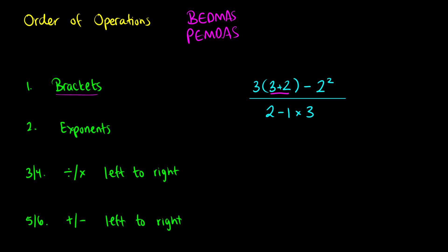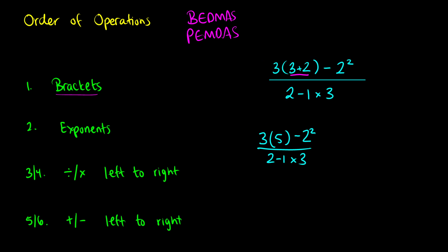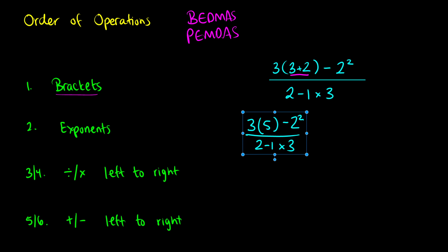We do everything inside the brackets first. That gives us 3 times 5 — since 3 plus 2 is 5 — and we subtract 2 squared, all divided by 2 minus 1 times 3. The next step says we should do exponents, which is the same thing as powers. So if you have 2 squared, 2 cubed, and so on, we handle those next.